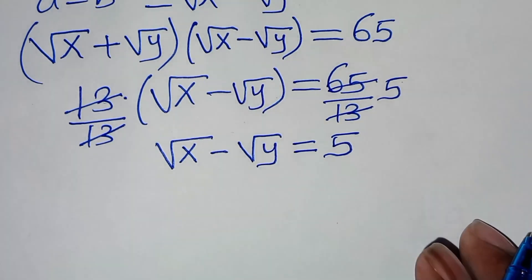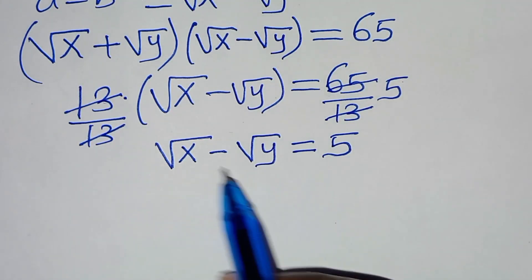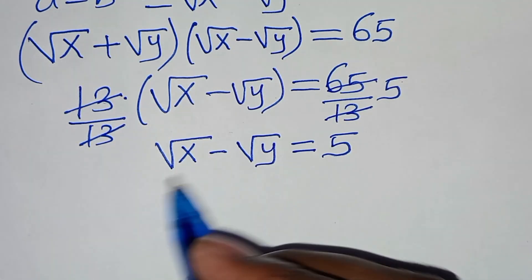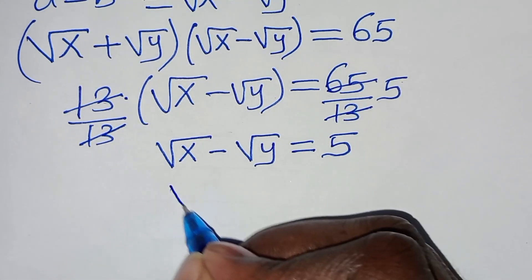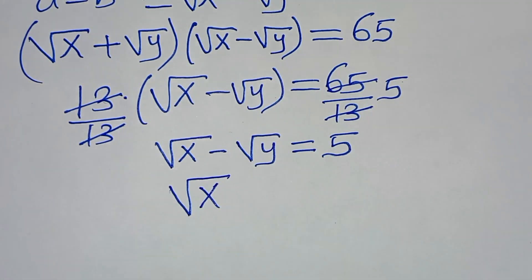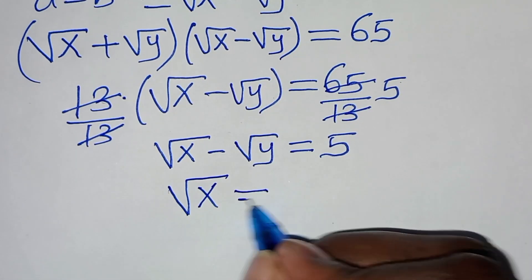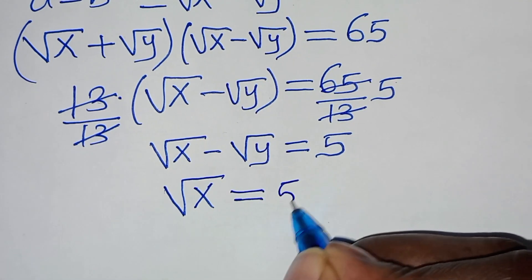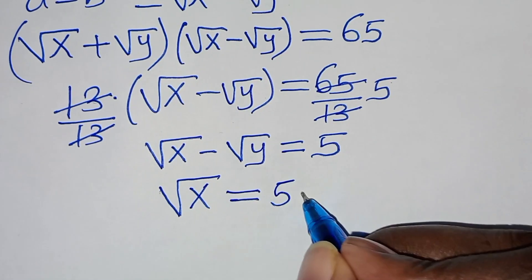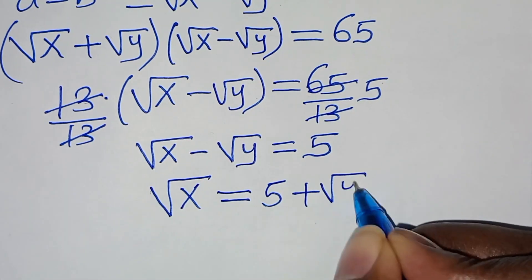Now the next step: let's make square root of x the subject of the formula, so that square root of x equals 5 plus square root of y.